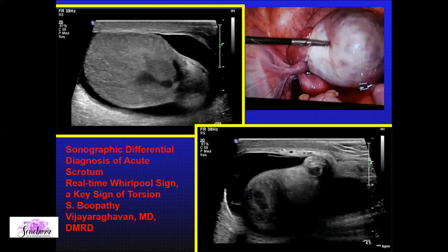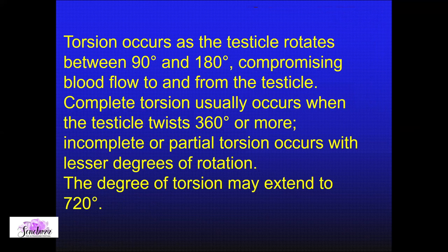When you talk about torsion, there is going to be some degree of twist — the testicle twists around its axis. Literature states that torsions extend from 90, 180, 360, and 520 degrees. Whenever the twist crosses 360 degrees, it causes complete torsion, and most of the time leads to a non-salvageable testis. Anything less than 180 or 90 degrees falls into the category of incomplete or partial torsion, which you sometimes may or may not pick up in practice.